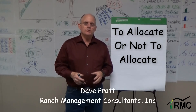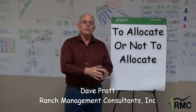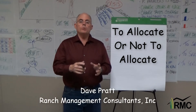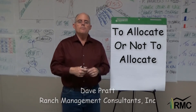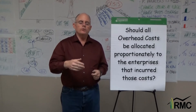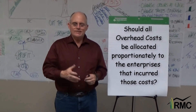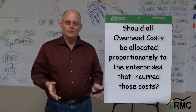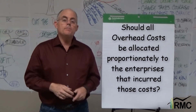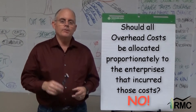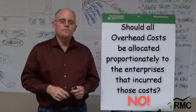Most university economists tell you to allocate overhead costs proportionately back to the enterprises that incurred those costs. It seems logical, but it can be bad advice. Here's why.